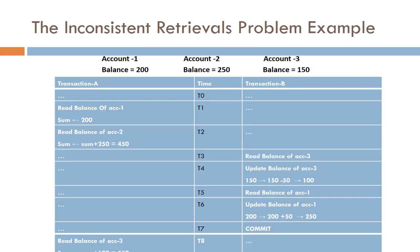In the example, two transactions operate on three accounts: account 1 with balance 200, account 2 with 250, and account 3 with 150. Transaction A is computing the sum of all three account balances. Transaction B is transferring 50 from account 3 to account 1 — withdrawing 50 from account 3 (balance becomes 100) and adding 50 to account 1 (balance becomes 250).